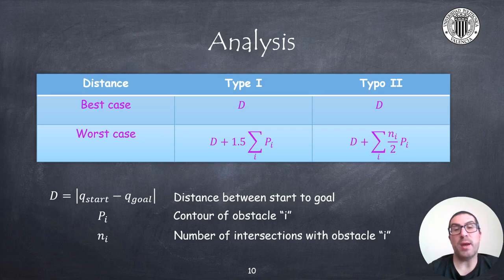The extreme case is where every time the robot finds an obstacle, it is right in the middle of the perimeter of the obstacle. Generally, type 2 algorithm will have a shorter travel distance as long as the number of intersections with the obstacle is small, ideally 1.